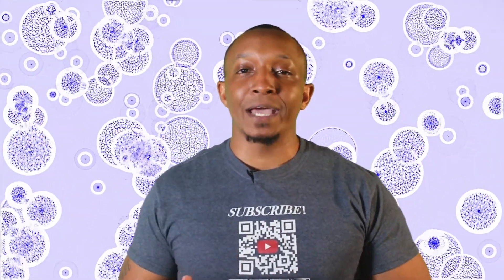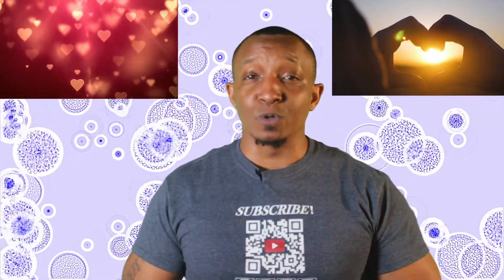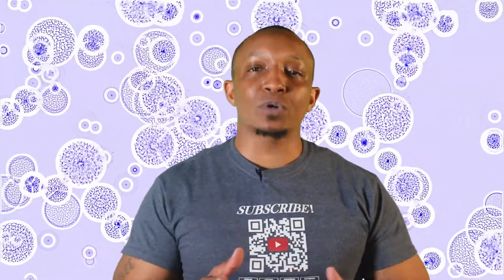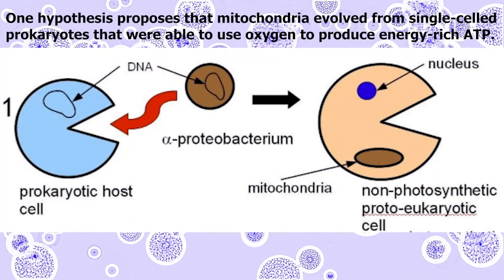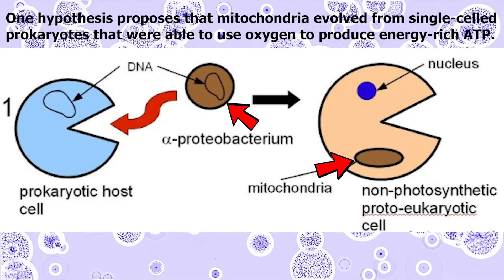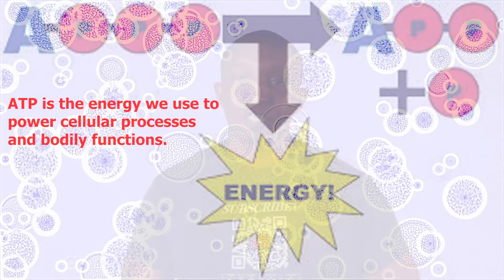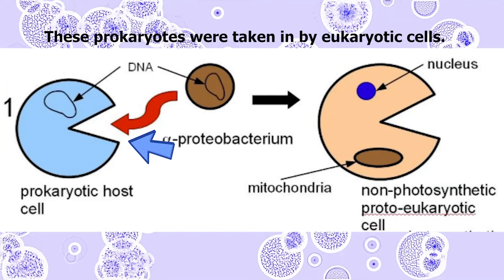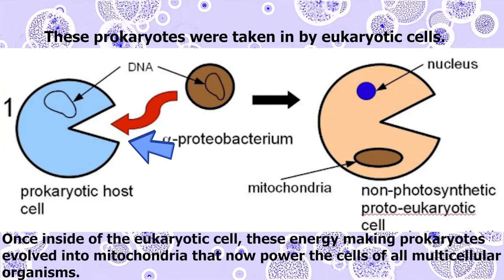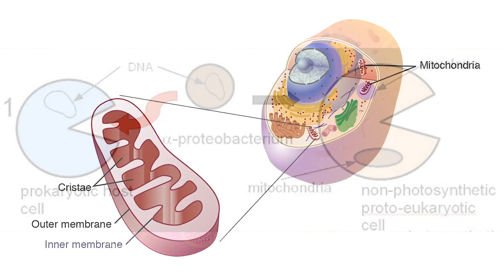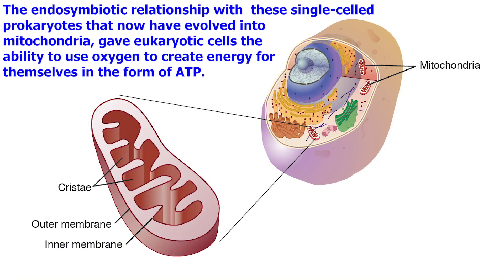This is a perfect match where both organisms win — a true example of relationship goals. Starting with mitochondria: one hypothesis proposes that mitochondria evolved from single-celled prokaryotes that were able to use oxygen to produce energy-rich ATP. ATP is the energy we use to power cellular processes and bodily functions. These prokaryotes were taken in by eukaryotic cells, and once inside, these energy-making prokaryotes evolved into mitochondria that now power the cells of all multicellular organisms, giving eukaryotic cells the ability to use oxygen to create ATP.